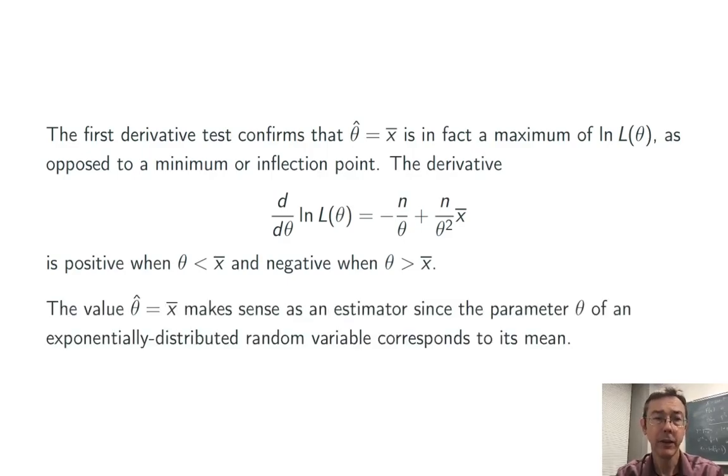It makes sense that the estimator theta hat would end up being the sample mean x bar, since the parameter theta represents the mean of an exponentially distributed random variable. So we estimate the parameter theta with the sample mean x bar. Makes sense.